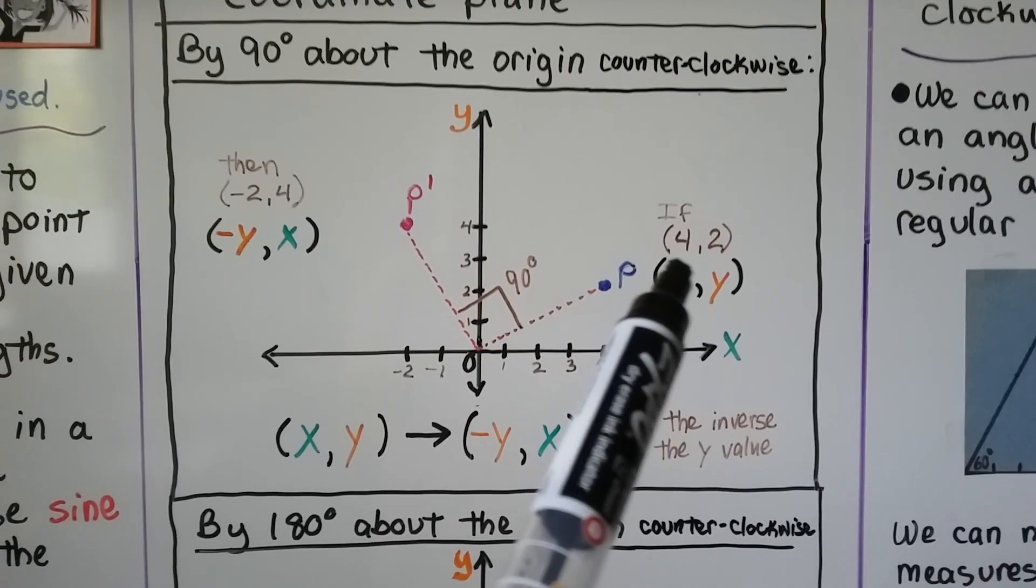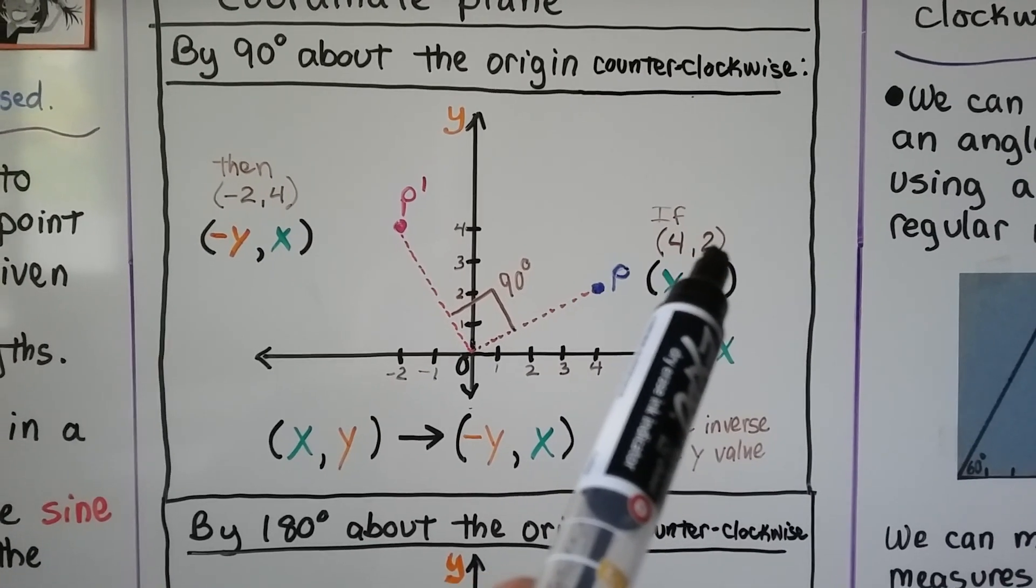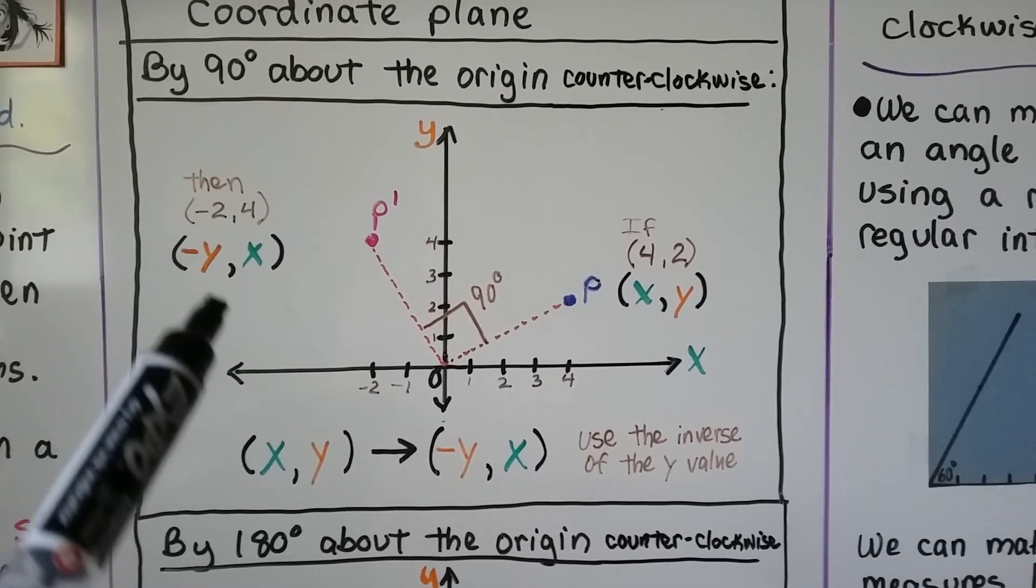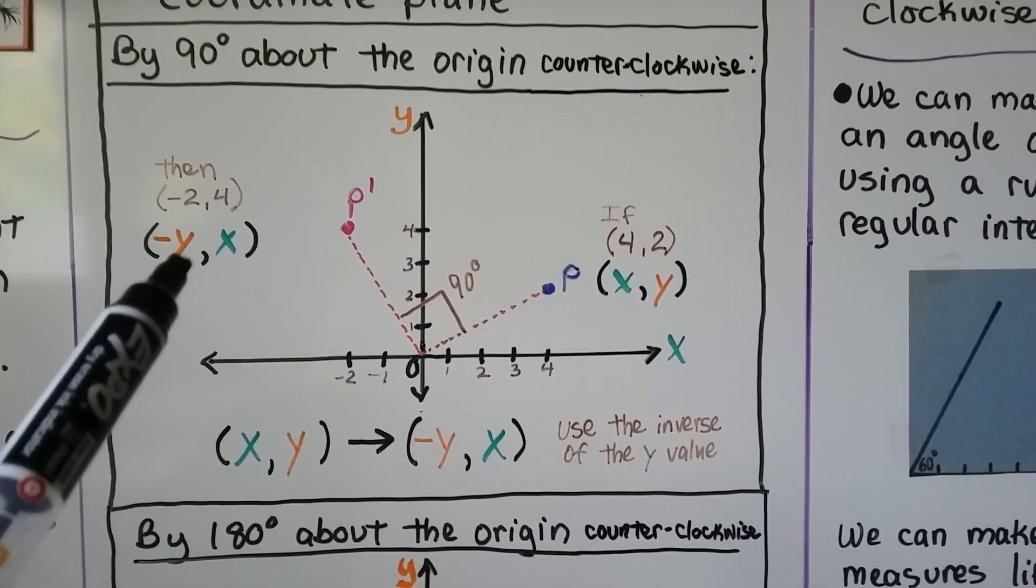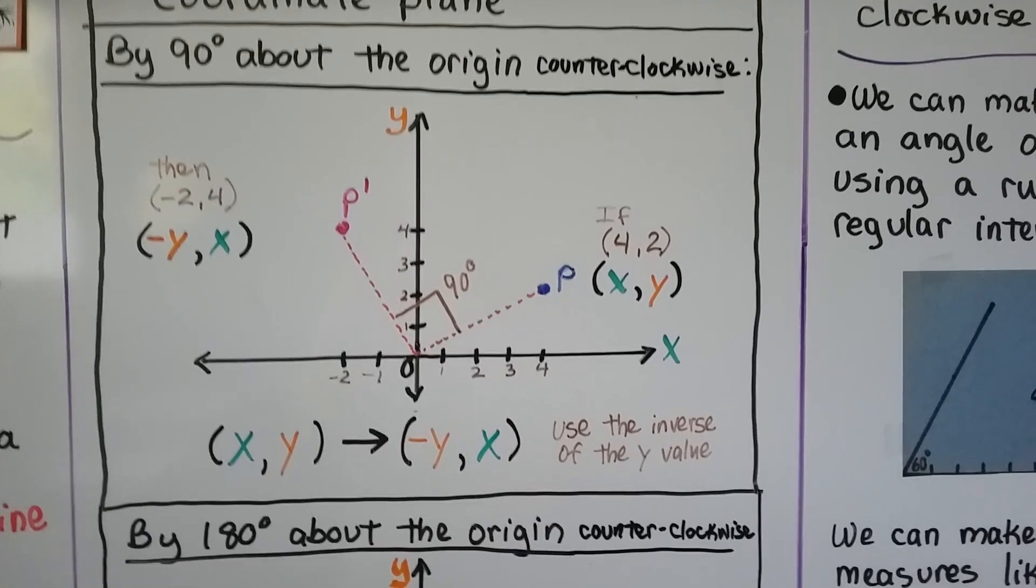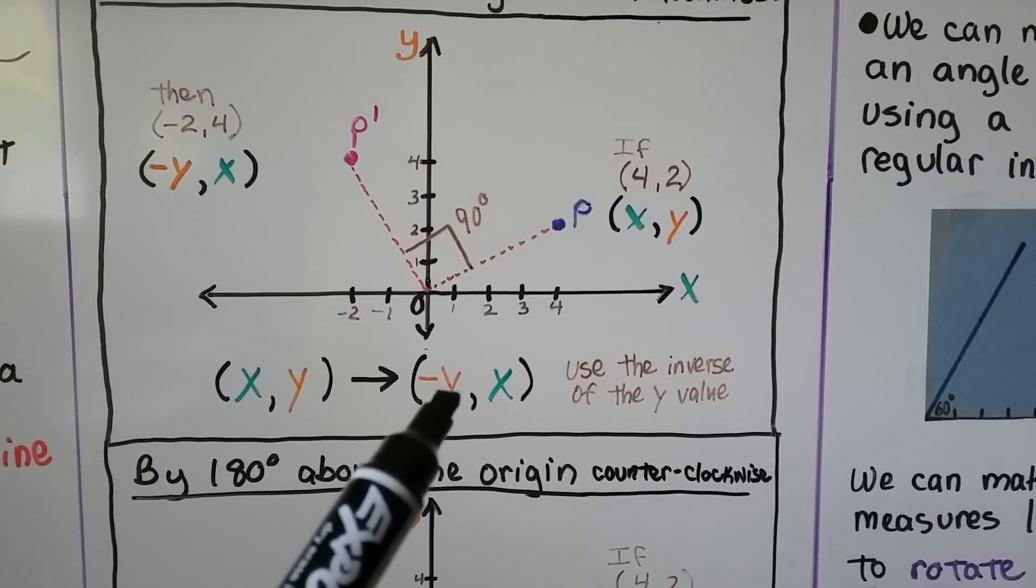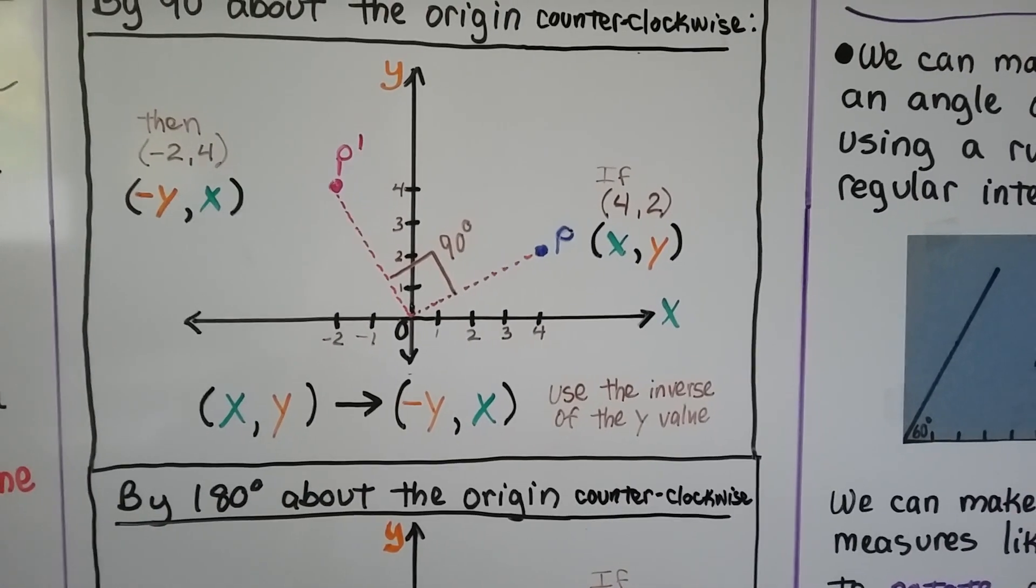And if you look, that's the inverse of this y value and our x value. We went from having a 2 for y to a negative 2, and then our 4 went over here. So we use the inverse of the y value for our x value.